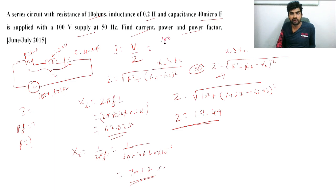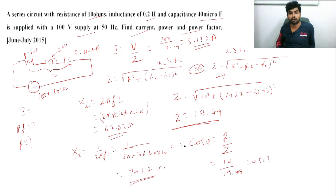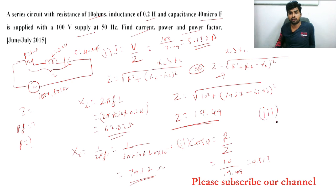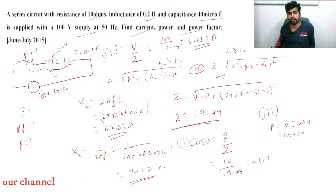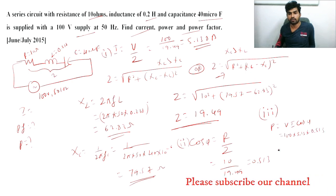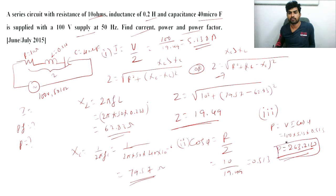Now we can calculate current I: I = V/Z = 100 / 19.49 = 5.138 amps. Power factor cos φ = R/Z = 10 / 19.49 = 0.513. Power = V × I × cos φ = 100 × 5.13 × 0.513 = 263.21 watts.